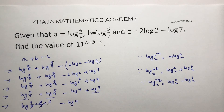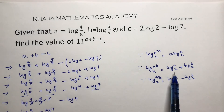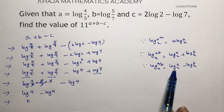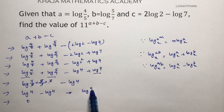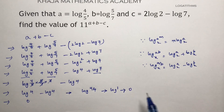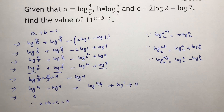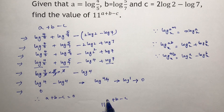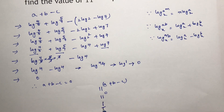This simplifies to log(4/4), which is log(1). Log(1) is equal to 0. So a + b - c equals 0. Therefore 11 to the power of (a + b - c) is 11⁰, and any number raised to the power 0 is 1. So the final answer is 1.